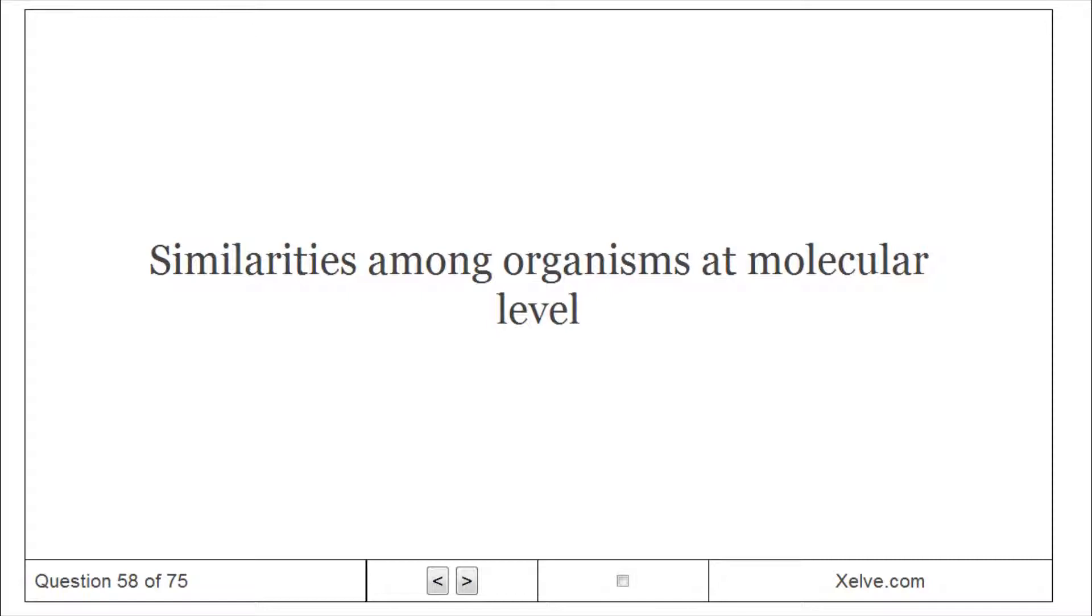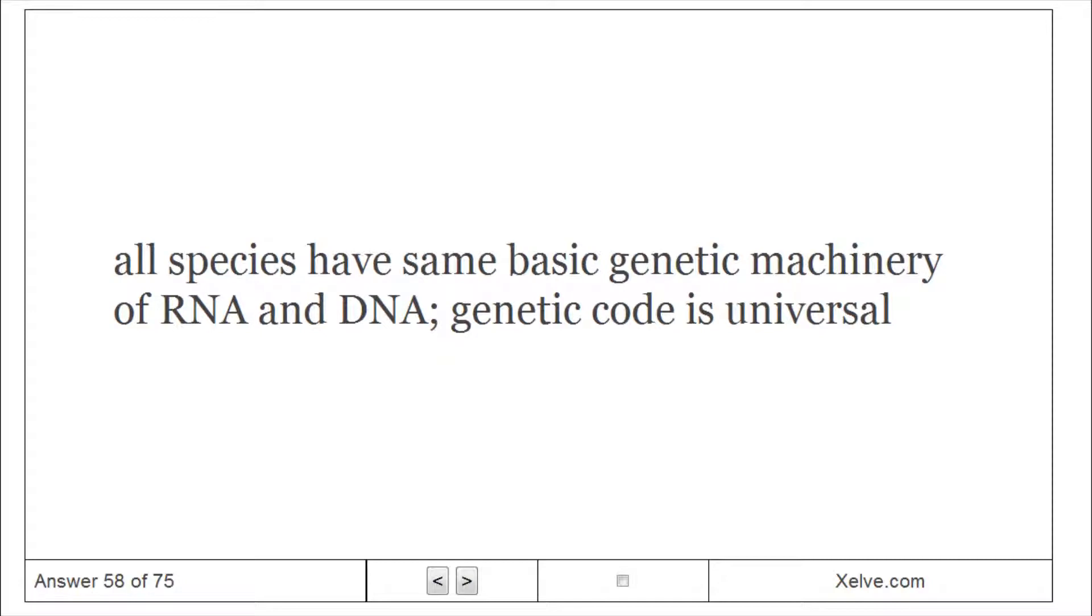Similarities among organisms at molecular level: All species have same basic genetic machinery of RNA and DNA. Genetic code is universal.